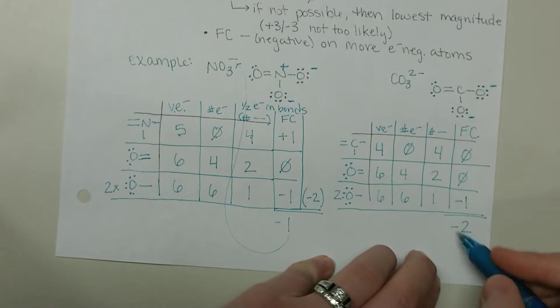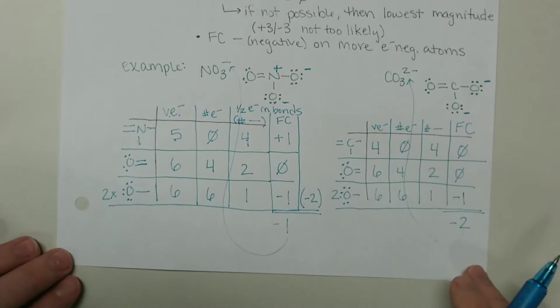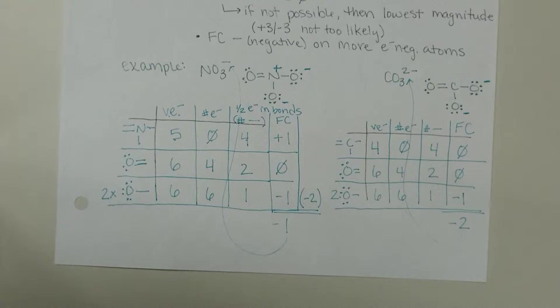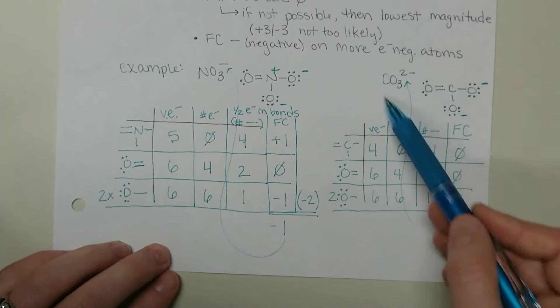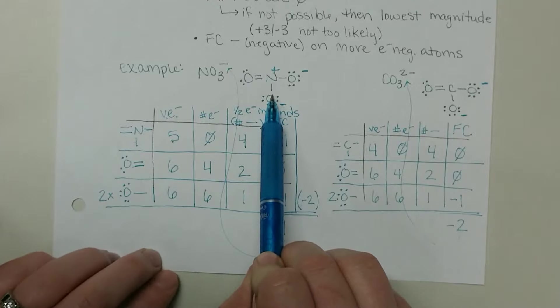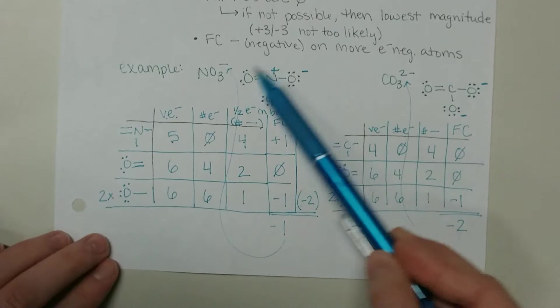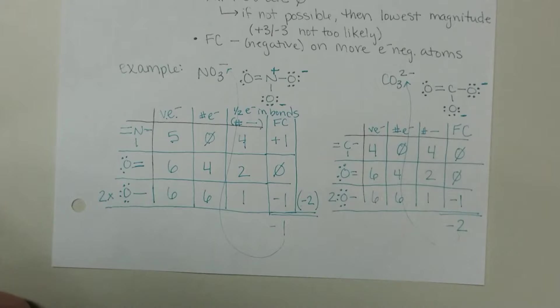And that is where our formal charge matches the charge of the molecule. That is why we have a negative two charge on carbonate versus a negative one charge on the nitrate, even though they look like they have the same skeletal structure.